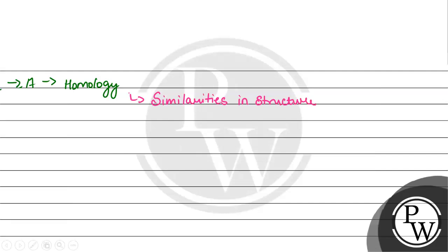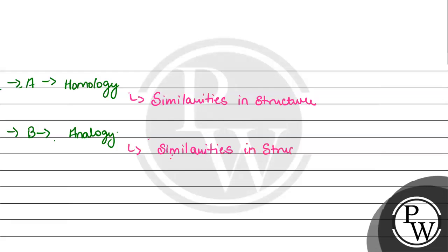Option B is analogy. Analogy आती है जब structures तो similar हैं, but they are adapting due to different factors. There is similarity in structure, but these organisms do not share common ancestors — their structures become similar due to environmental changes.